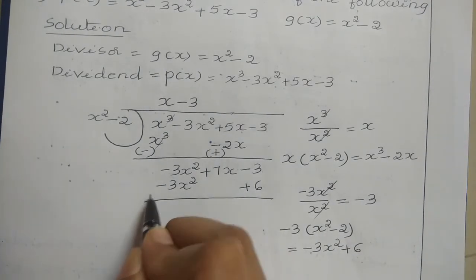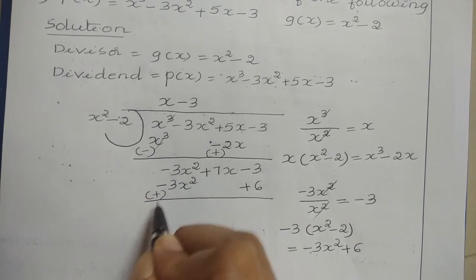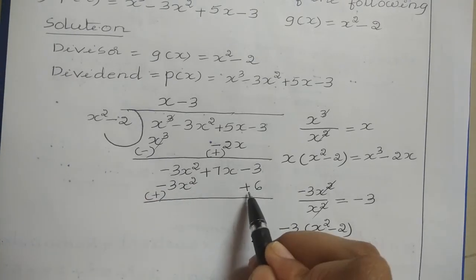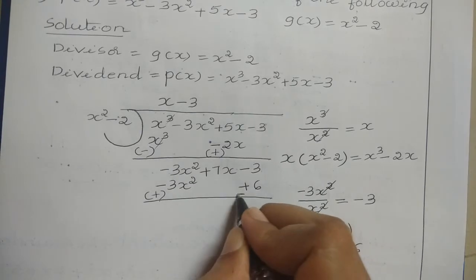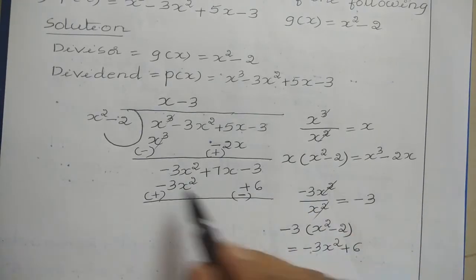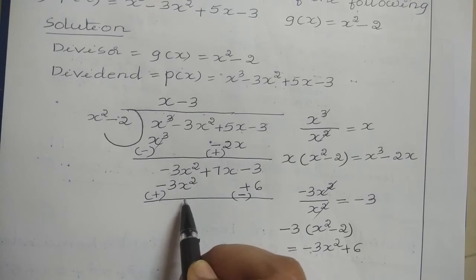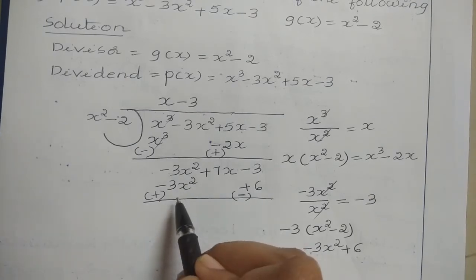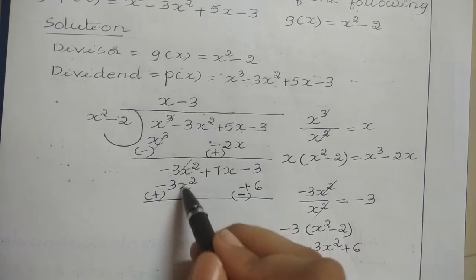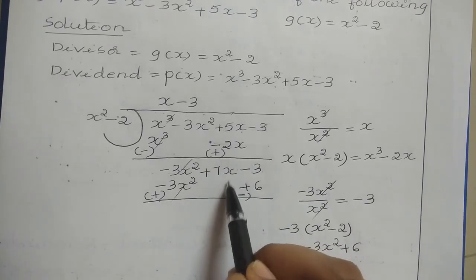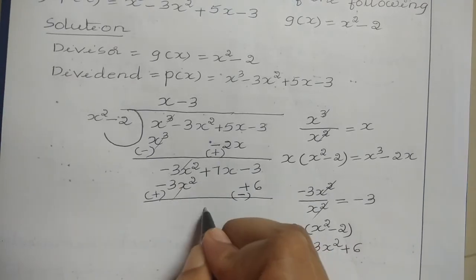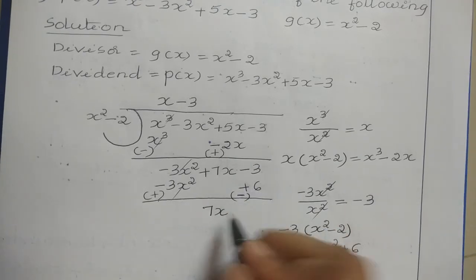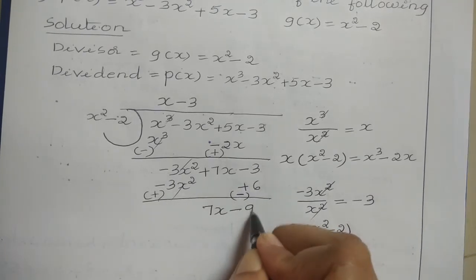The minus sign changes: minus minus becomes plus. So minus 3X squared plus 3X squared cancels. The 7X term has no corresponding term below it, so 7X remains. Then minus 3 minus 6 gives minus 9. So the new dividend is 7X minus 9.